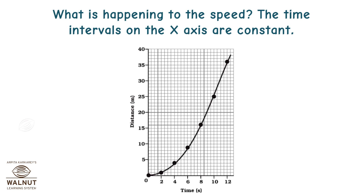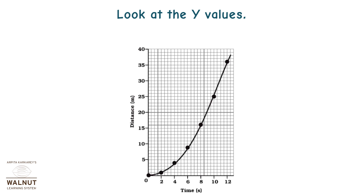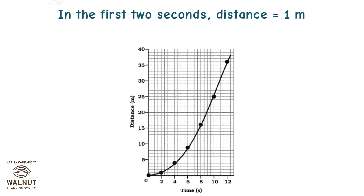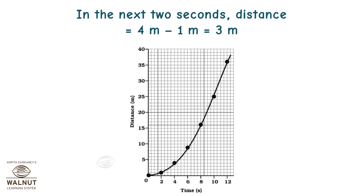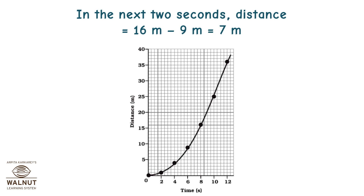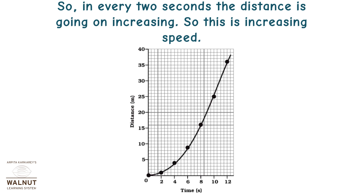What is happening to the speed? The time intervals on the x-axis are constant. In the first two seconds, distance equals 1 meter. In the next two seconds, distance equals 4 minus 1, which is 3 meters. In the next two seconds, it is 9 minus 4, which is 5 meters. In the next two seconds, 16 minus 9 equals 7 meters. In the next two seconds, 36 minus 16 equals 20 meters. So in every 2 seconds the distance is increasing, meaning this is increasing speed.